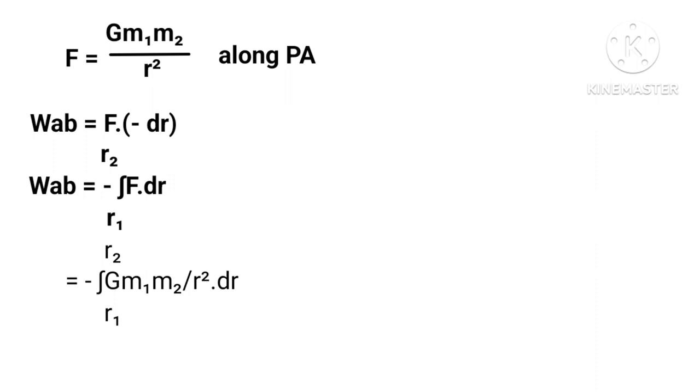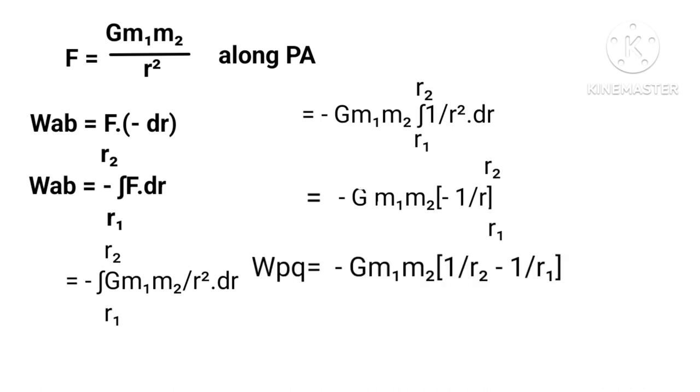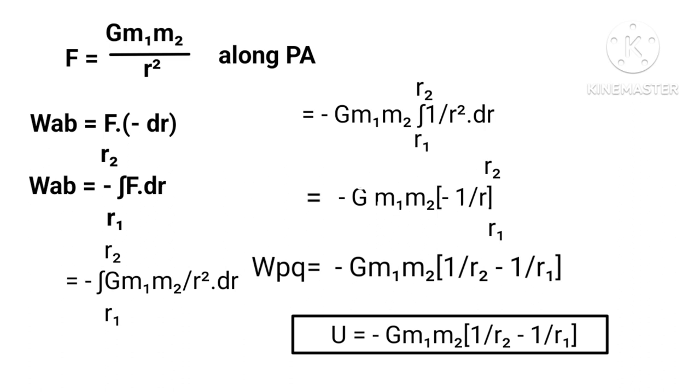Wpq equals Gm1m2 times negative one upon r, evaluated from r1 to r2, which equals Gm1m2 times one upon r1 minus one upon r2. Since the work done is stored within its potential energy, therefore U equals Gm1m2 times one upon r2 minus one upon r1.